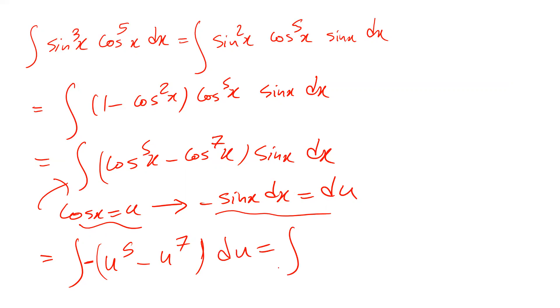Which is equal to integral of u7 minus u5 du. And this integral, integral of u7 is equal to u8 divided by 8 minus integral of u5 is u6 divided by 6 plus c, which is the constant of the integral.